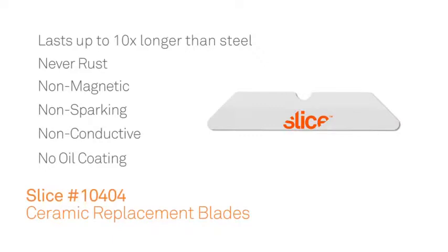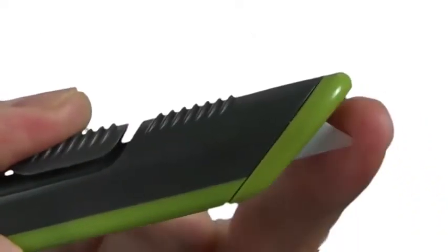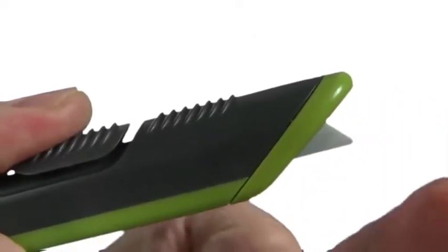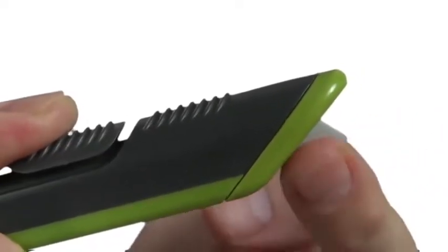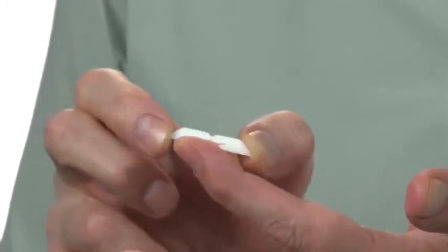And unlike traditional metal blades, they have no oil coating. They're much safer to the touch compared to traditional metal blades due to our proprietary sharpening and manufacturing process. They're infinitely safer to hold and use versus metal, and they have a rounded tip for added safety.